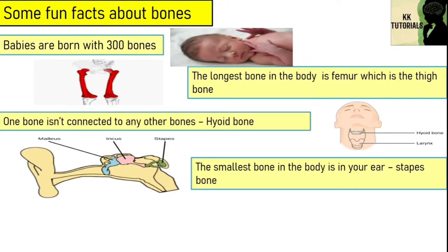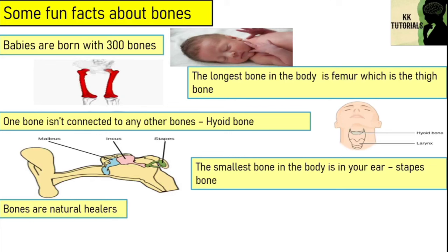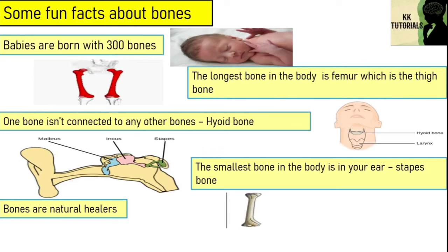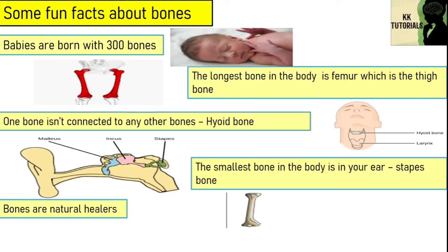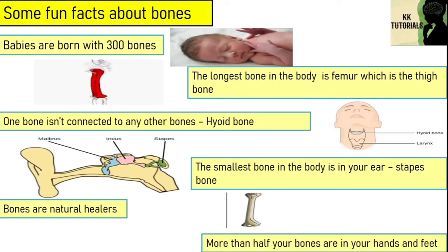Bones are natural healers — when you fracture a bone, your body will go to work producing new bone cells and helping heal the break. More than half of your bones are in your hands and feet: out of 206 bones in total, 106 of them are in your hands and feet.